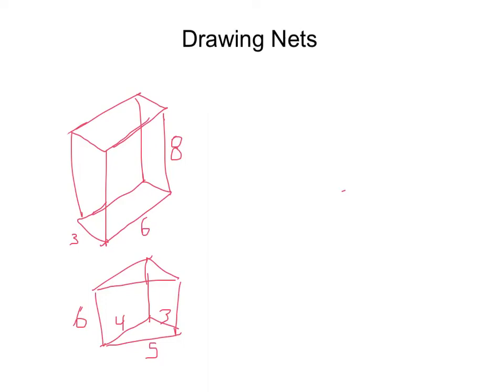Okay, this video is about drawing nets. As we know, a net basically is what a three-dimensional solid looks like if you were to unfold all of the sides and make it now a two-dimensional object or shape.